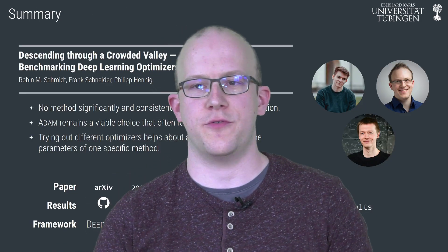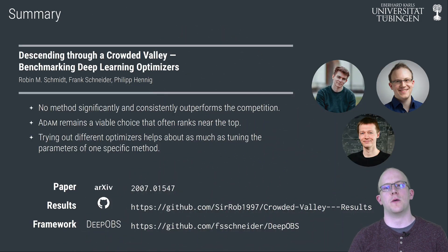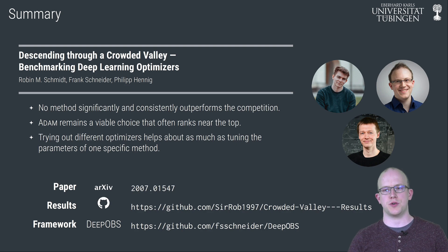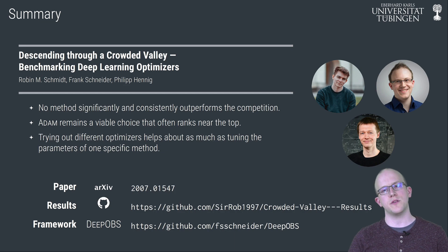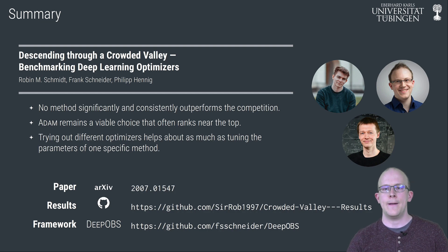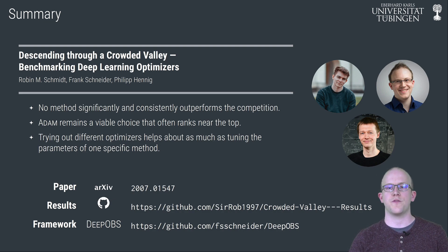To summarize, we have performed an extensive benchmark of 15 popular optimization methods for deep learning. Analyzing more than 50,000 individual training runs, we can see some structure in this crowded field. There is currently no method that significantly and consistently outperforms the competition. The comparably traditional Adam remains a viable choice that often ranks near the top and is a good out-of-the-box solution. In some scenarios, trying out different optimizers with their default parameters helps about as much as tuning the parameters of one specific method. We have made all benchmark data available open source, which can be used as well-tuned baselines for future optimizer benchmarks.